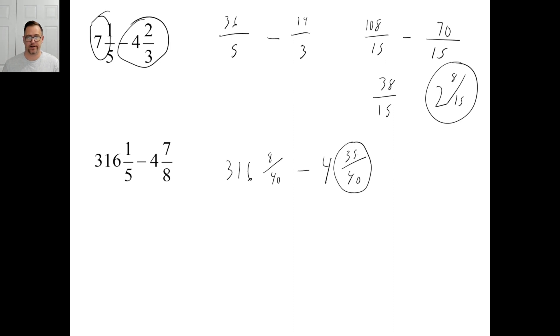So what you're going to do is you're going to borrow forty-fortieths from this. That makes it three-hundred fifteen. So now I have forty plus eight, or forty-eight fortieths. So I have three-hundred fifteen minus four, which is three-hundred eleven. Forty-eight minus thirty-five is thirteen-fortieths, and boom, there you go.